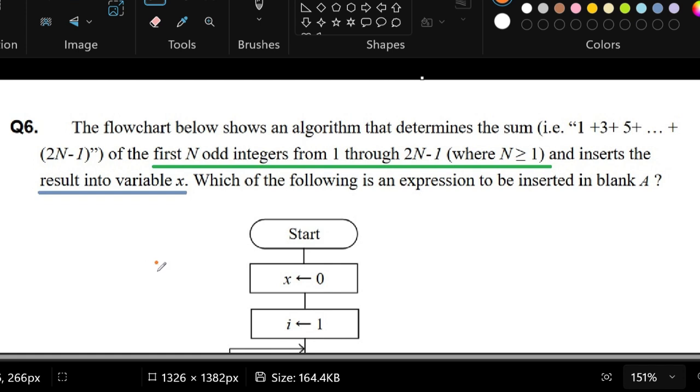we are given a flowchart which shows an algorithm that determines the sum 1 plus 3 plus 5 and so on until 2N minus 1. The first N odd integers from 1 through 2N minus 1 where N is greater than or equal to 1.